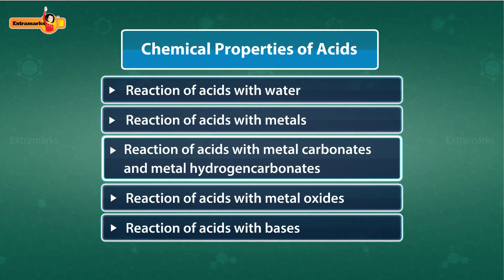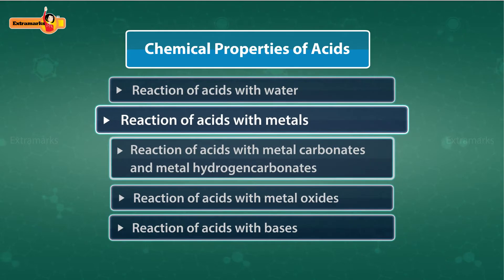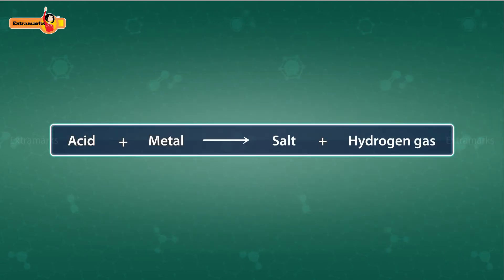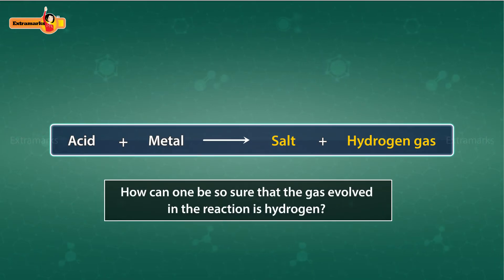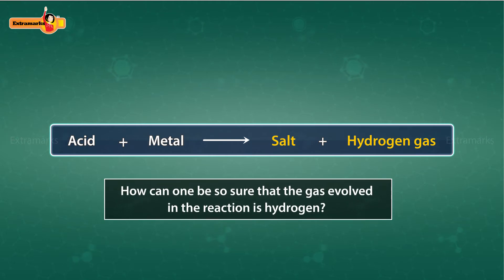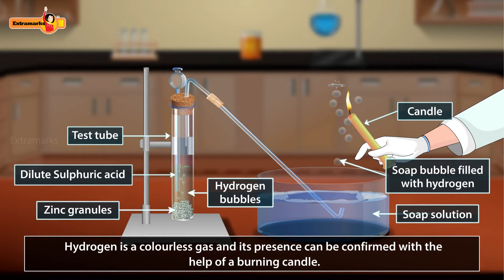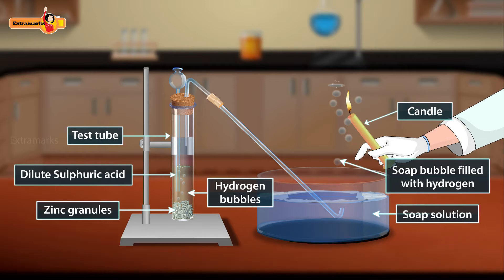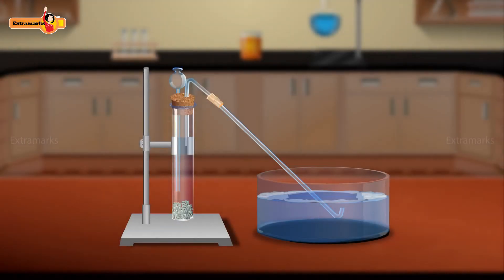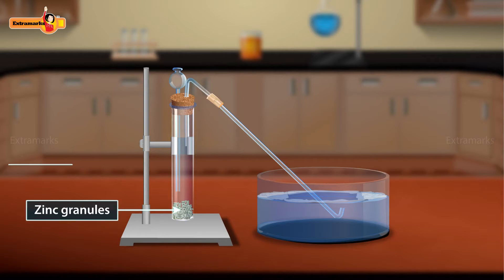Now we will find what happens when metals react with acids. Salt and hydrogen gas are formed by the reaction of acids with metals. But how can one be sure that the gas evolved in the reaction is hydrogen? Hydrogen is a colorless gas and its presence can be confirmed with the help of a burning candle. Let's go to the laboratory and see how it can be done.